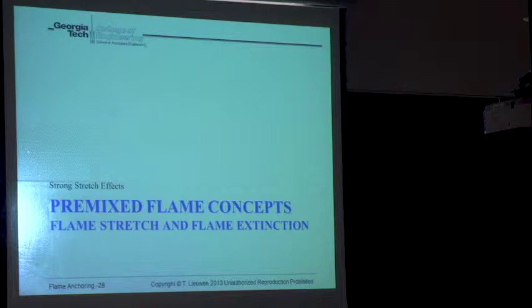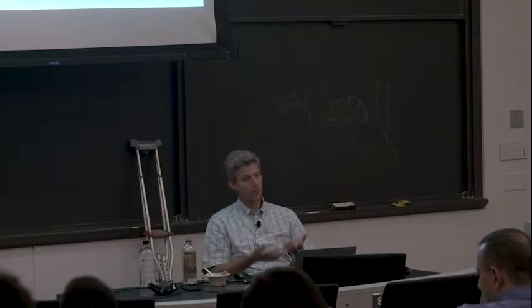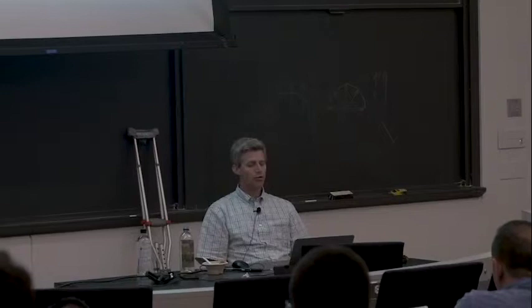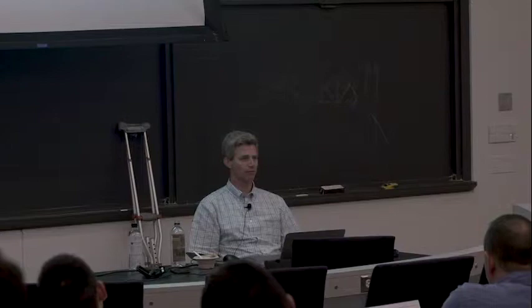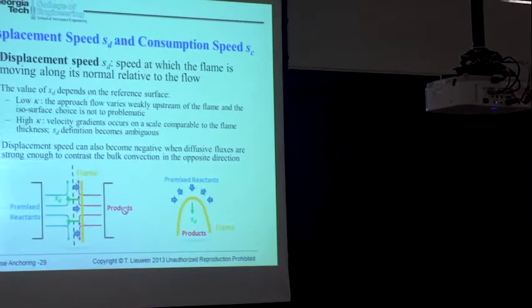Everything I've talked about so far is weak stretch — just a small perturbation around the nominal flame structure. Now I want to talk about strong stretch, which leads us to the phenomenon of flame extinction. We've talked about how stretch can make flames happy or sad, but if you stretch a flame too much, they all become sad — they will extinguish at some point.